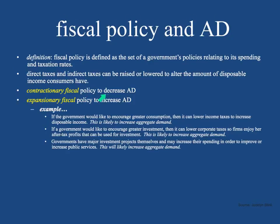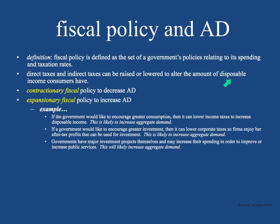If the government wants to decrease aggregate demand — because as aggregate demand goes up, there's going to be inflationary pressure, meaning a general pressure for prices to rise — the government might want to slow the economy down. The way they could do that is to increase either direct or indirect taxes so that people have less disposable income. If you make $100 a year taxed at 25%, you have $75 left. But if you increase that tax rate to 30%, now you only have $70 — your disposable income has been cut by 5%.